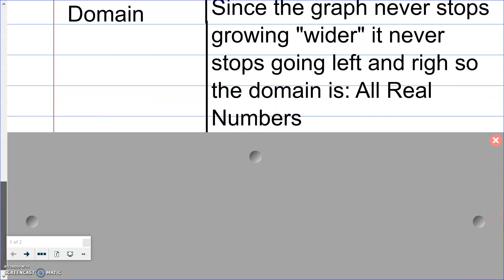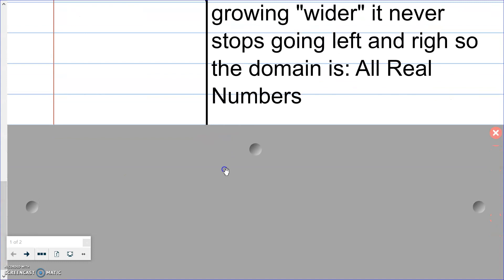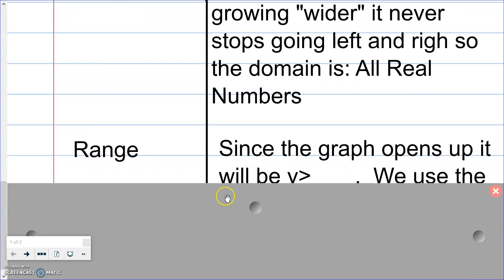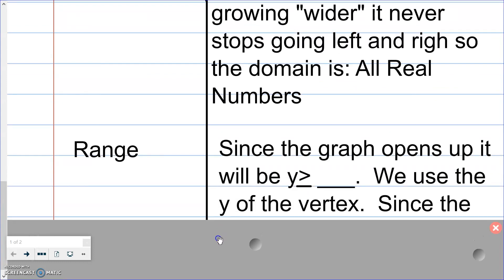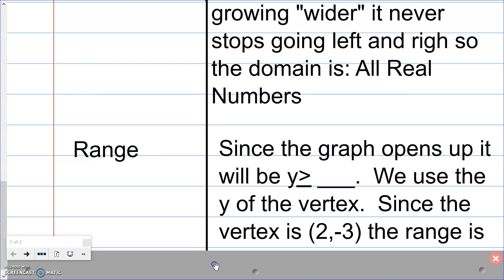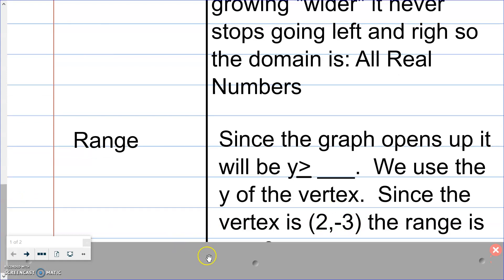Our range however is our y values and since the graph opens up we will write this as y is greater than or equal to some number and we find that number in our vertex. We use the y part of our vertex and since the vertex is (2,-3) and this is our y part, the range is y≥-3. We never go below it, we're always above -3.